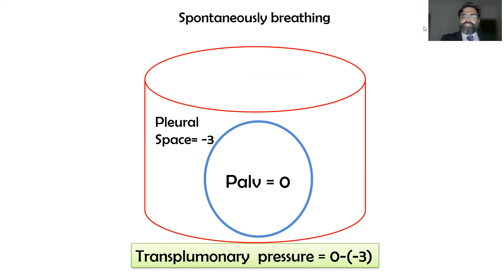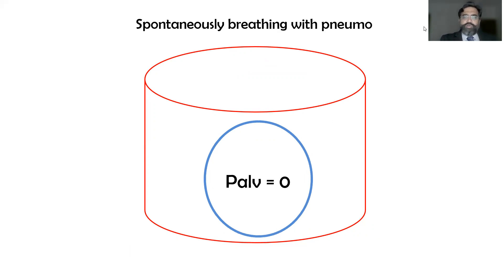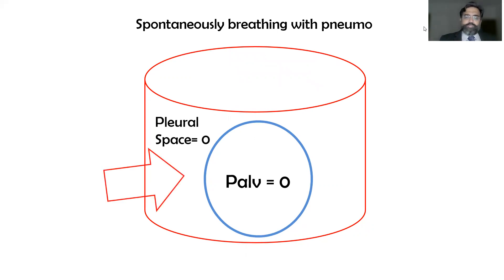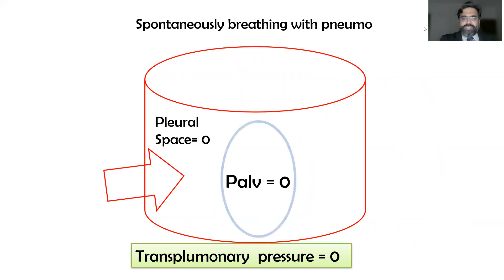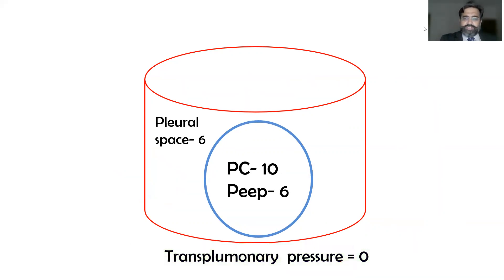In a hypothetical situation of pneumothorax, the outside (pleural) pressure becomes equal to the inside pressure — both become 0. So 0 minus 0 equals 0. Once the transpulmonary pressure reaches 0, there will be collapse at the time of expiration, because the transpulmonary pressure is no longer greater than 0.